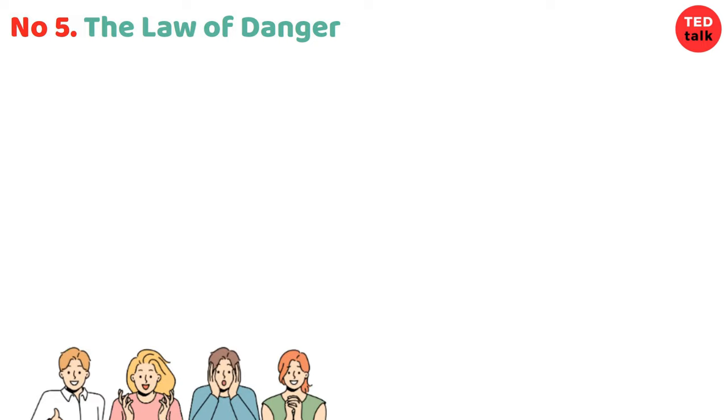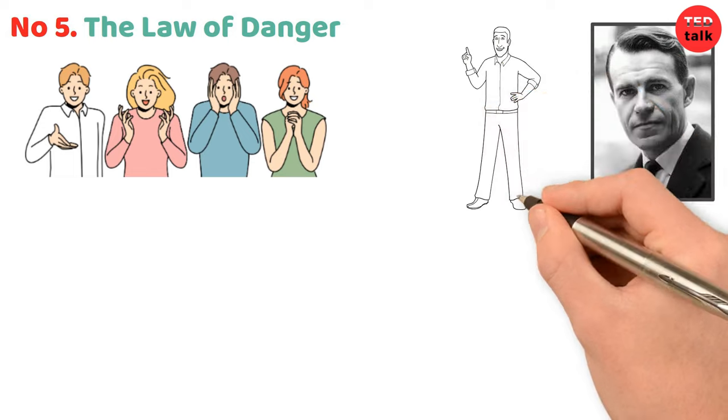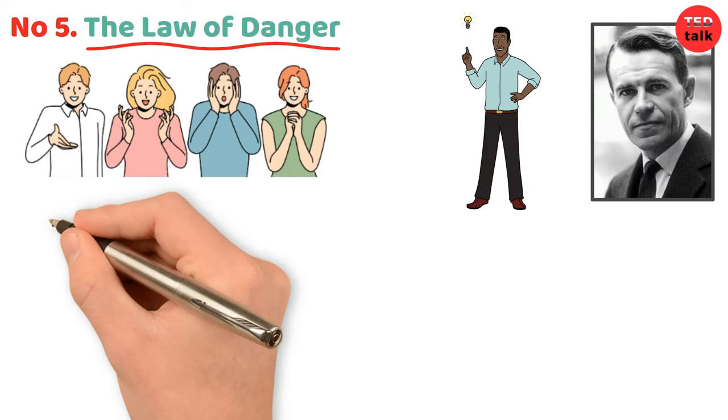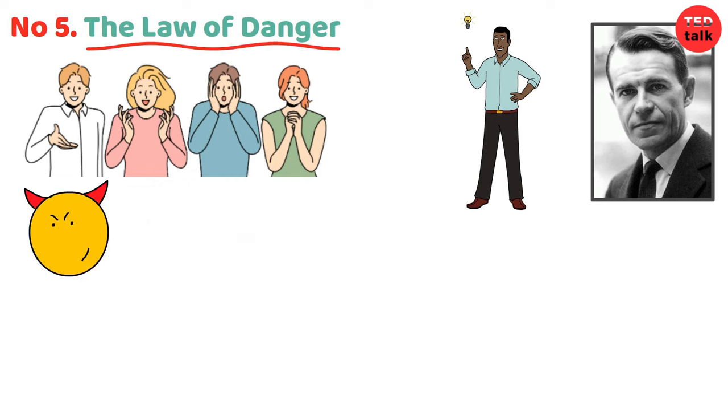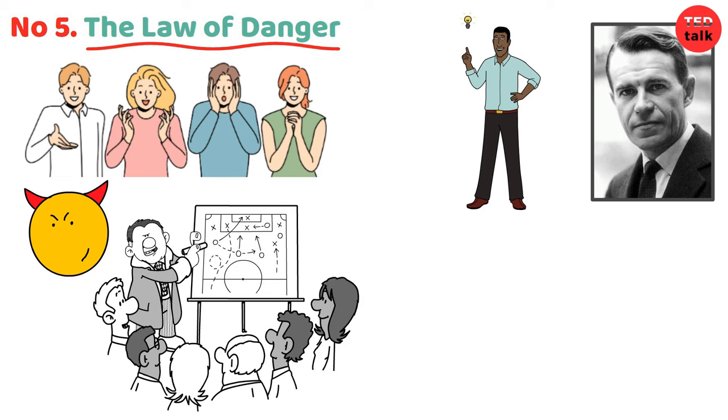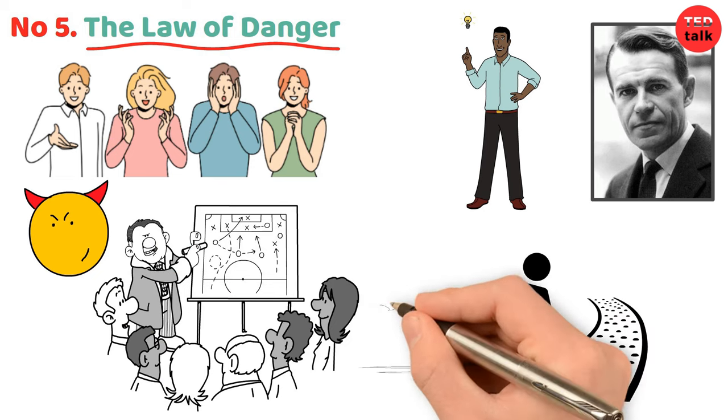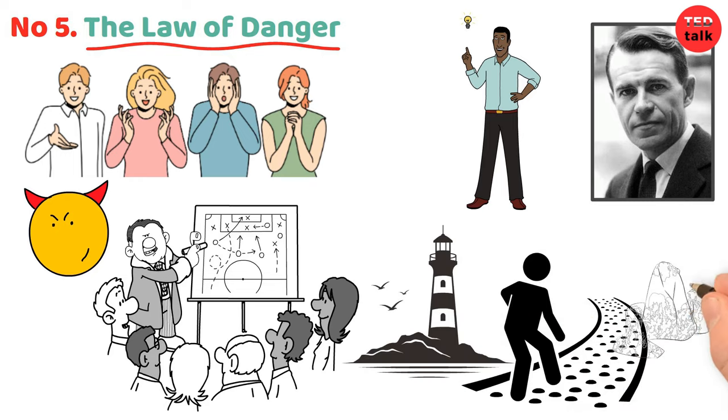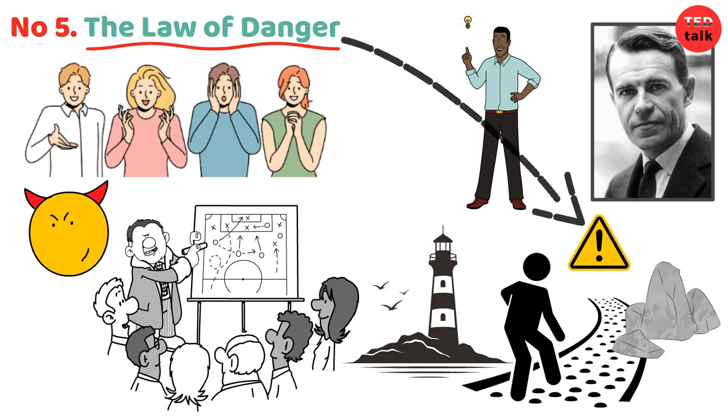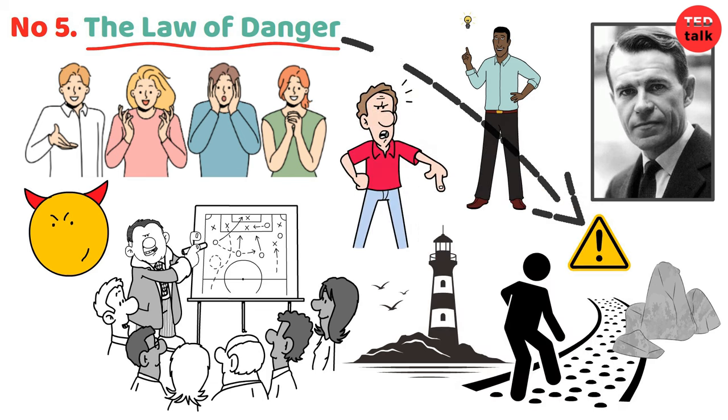Number five: the law of danger. In the vast expanse of human behavior, Carlo M. Cipolla uncovered a profound truth encapsulated in the law of danger. This law, though it may sound ominous, offers invaluable insights into the potential consequences of human folly. Imagine you're walking along a narrow path surrounded by towering cliffs and jagged rocks. Suddenly, you come across a sign warning of danger ahead. That's where Cipolla's law of danger comes into play. It warns us that silly people can be the most dangerous of all, capable of causing harm and chaos to themselves and those around them.